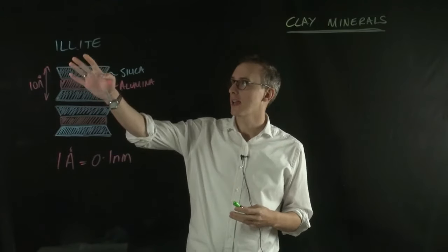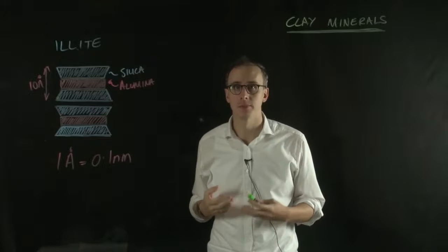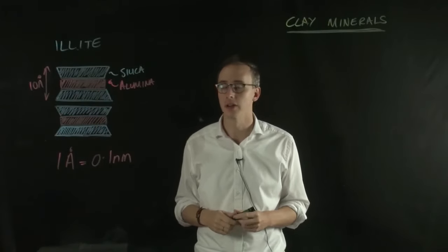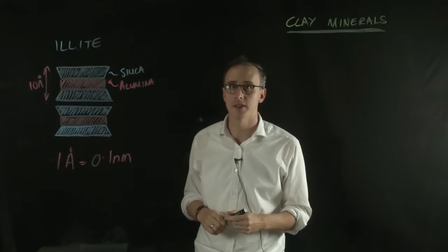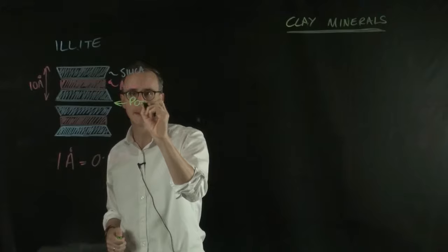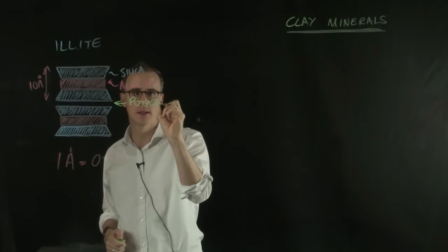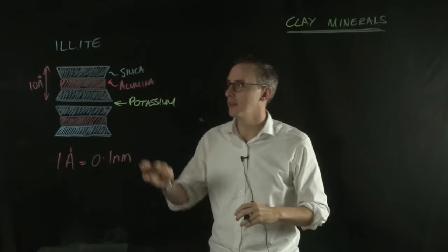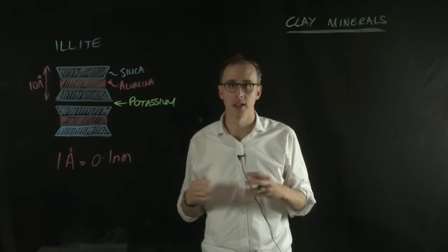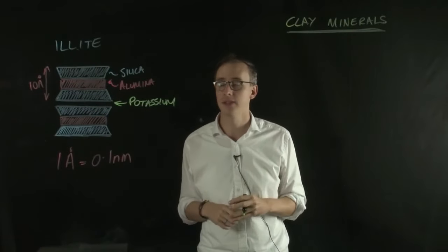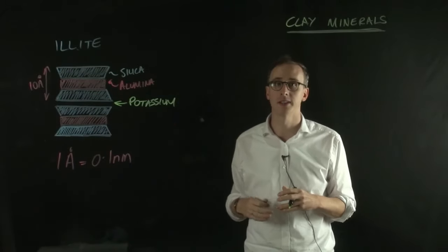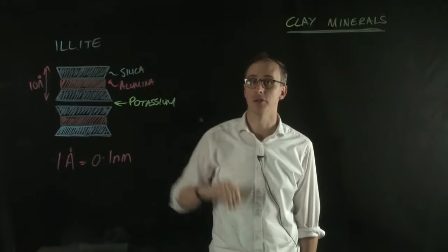Illite clay minerals have the same arrangement as montmorillonite, with three layers connected to another three layers. But the difference here is that we now have really much larger potassium ions sitting in the interstitial gap. Potassium has a much larger diameter, even than calcium, but it has only one charge. That's what gives rise to illite clay minerals.